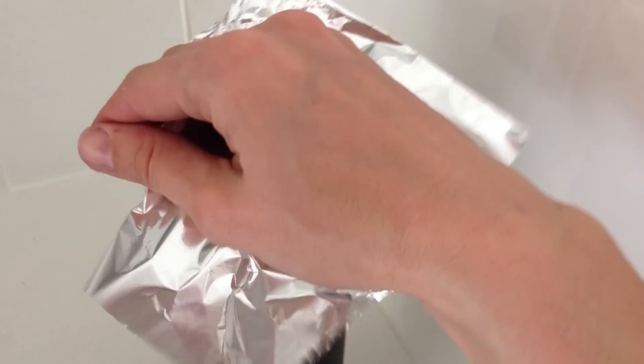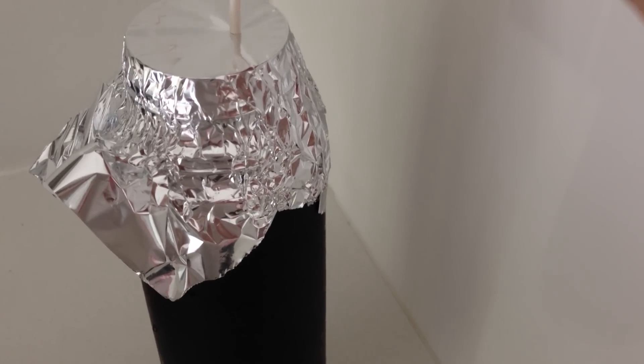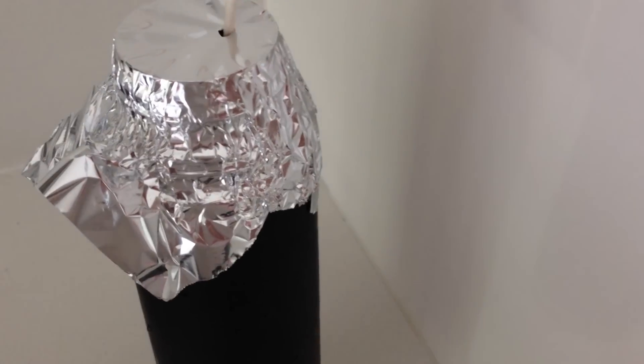Put some aluminum foil over the top of your thermos and poke those lollipop sticks in through the aluminum foil into your hot sugar solution.